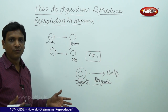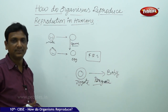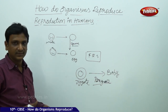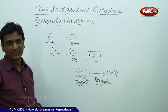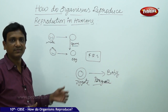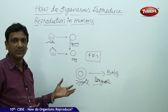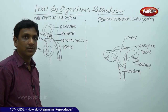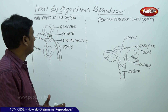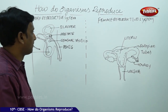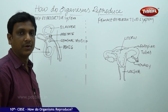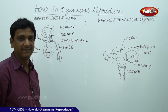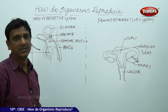If fertilization takes place, pregnancy begins and the zygote develops into a baby. If there is no fertilization, the egg cell is flushed out during the process of menstruation. The male and female reproductive cells are produced in the reproductive systems of males and females, which are different from each other.